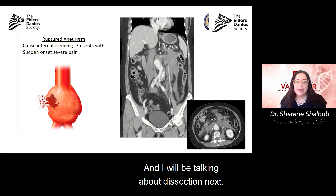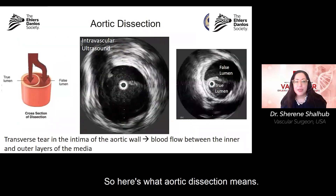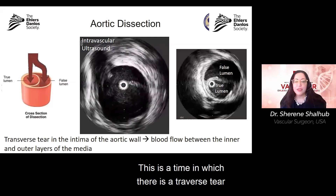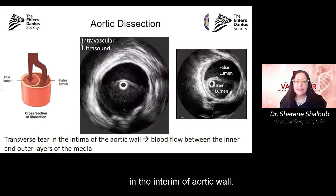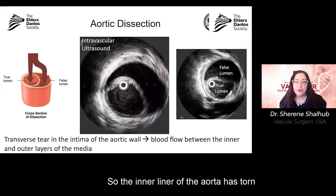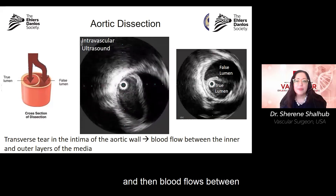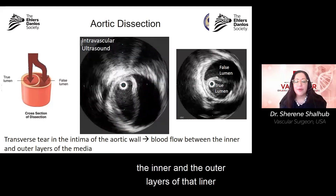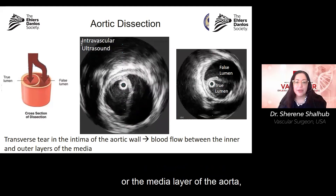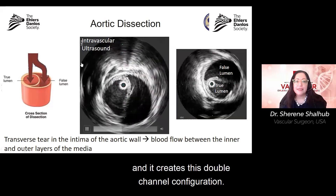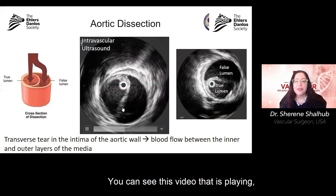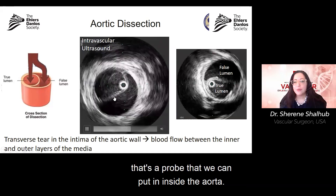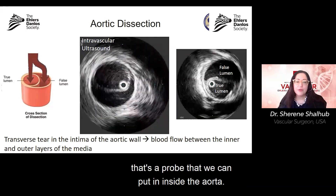I will be talking about dissection next. Aortic dissection is when there is a transverse tear in the intima of the aortic wall. The inner liner of the aorta has torn, and blood flows between the inner and outer layers — the media layer. It creates a double channel configuration. This video playing is an intravascular ultrasound — a probe placed inside the aorta — recording in real time.